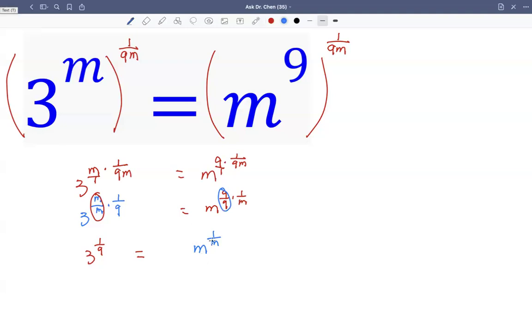The right hand side I have m raised by 1 over m. If the left hand side I have 3 raised by 1 over 3, then I will be done. But this is 3 raised by 1 over 9. So what I do is I'm going to multiply 1 over 9 by 1 over 3, because this is 3 over 3.